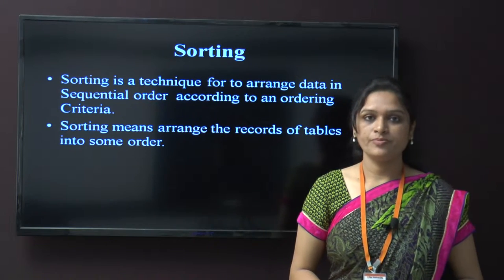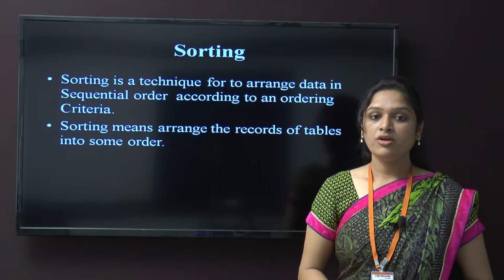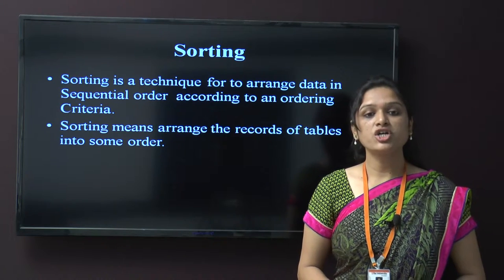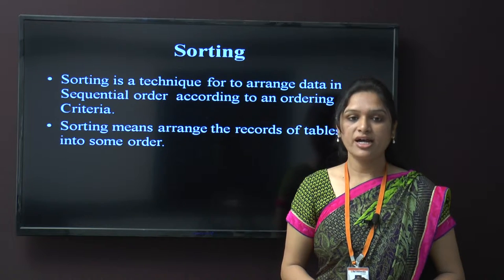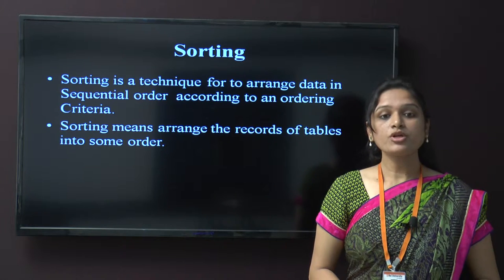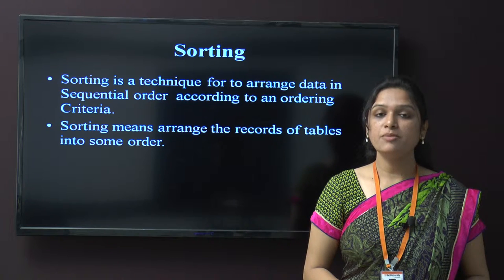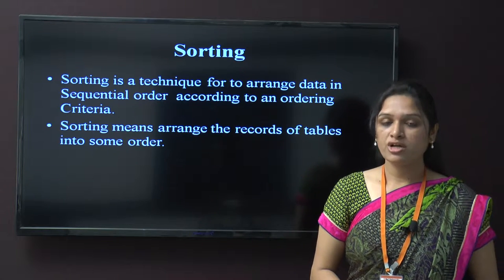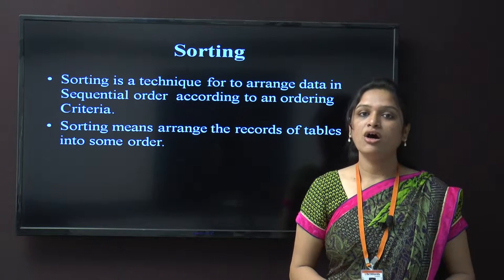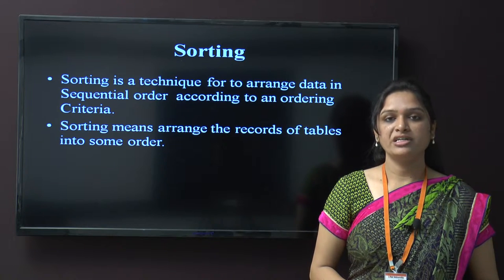First of all, what is sorting? In data structure we are using many types of techniques for sorting. It is a technique for arrangement of data in sequential order according to an ordering criteria, either ascending order or descending order. Sorting means to arrange the records of data or tables in a particular manner. Through sorting we can arrange any type of data in a particular manner, or we can access those particular data efficiently.